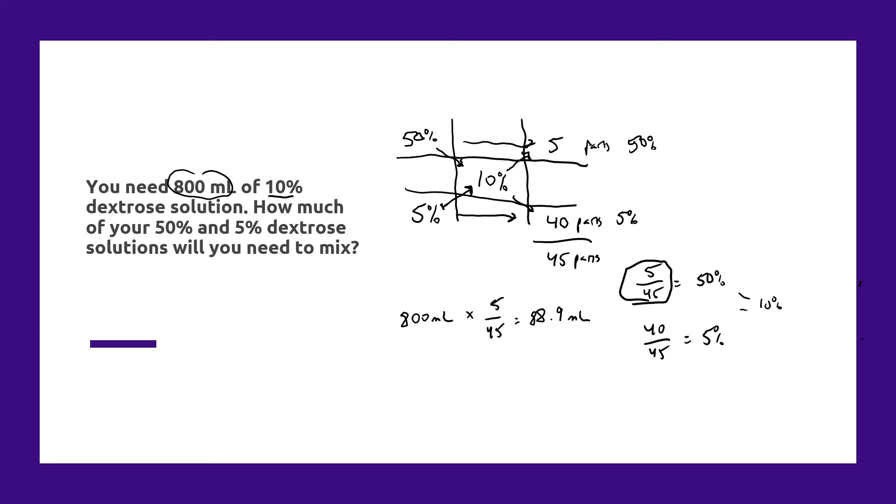And then to figure out the 5% component, we can do the same thing. Take 800 milliliters times 40 divided by 45. Or we can just take our 800 milliliters and subtract what we know we're using in the 50% solution. Minus 88.9 milliliters is going to be 711.1.